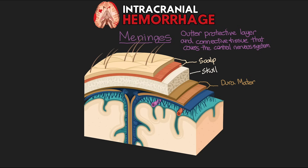The dura mater supports structures called dural sinuses, responsible for carrying blood and CSF away from the brain. Normally the two layers of the dura mater are right up against each other, but they separate in four fibrous septa, forming folds where the inner meningeal layer goes down into these septa while the top layer goes across forming the dural sinuses.